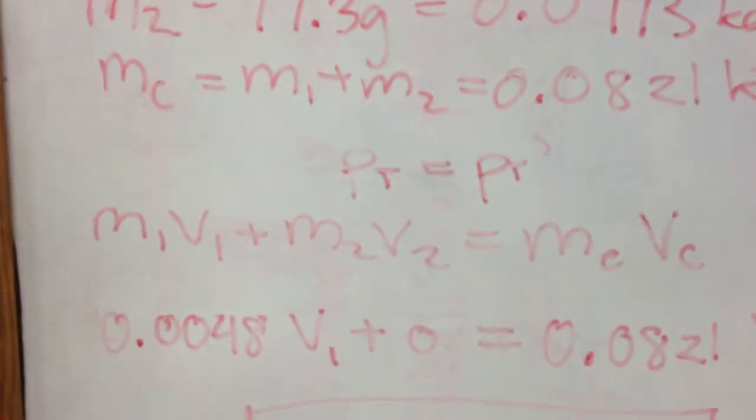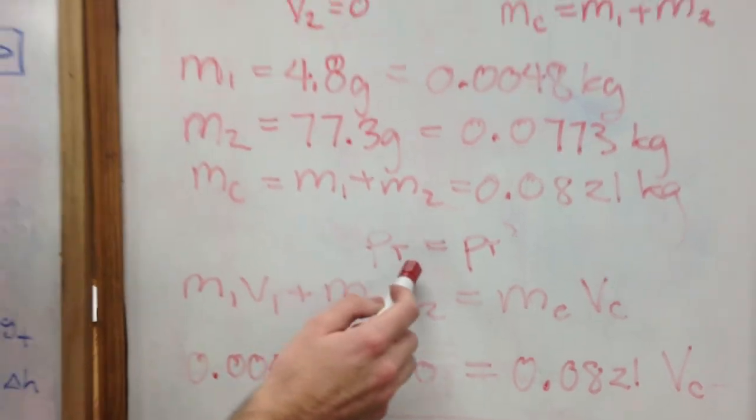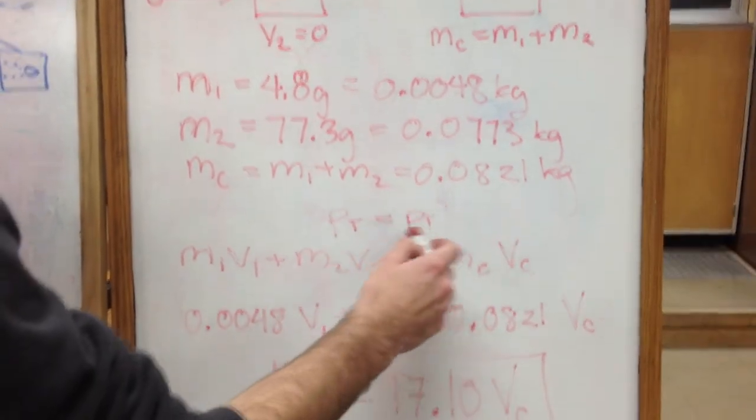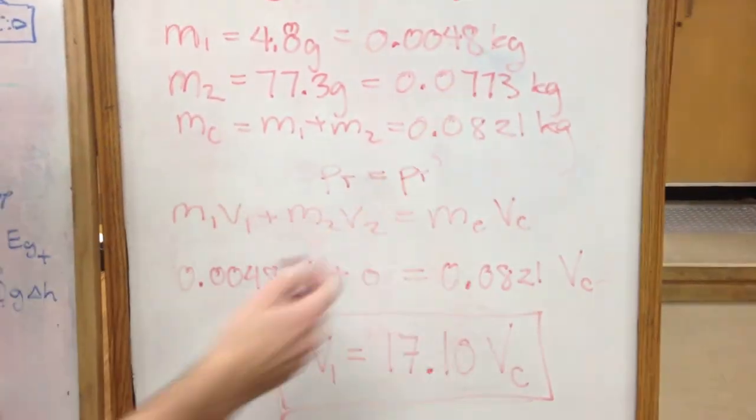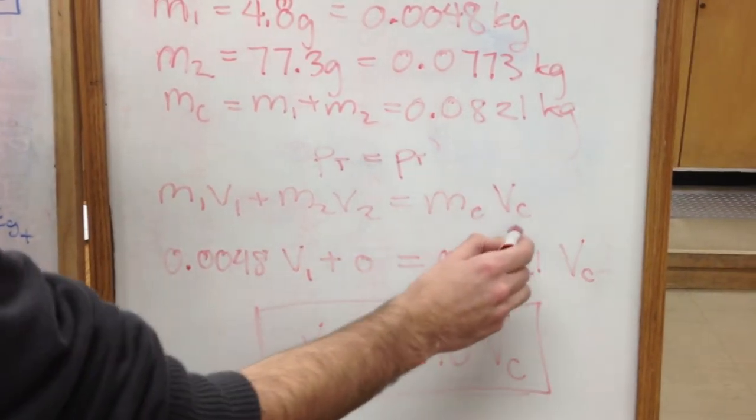Using the law of conservation of momentum, we compare the momentum of the objects before, and we say that that momentum equals the momentum of the objects combined afterwards. m1v1 plus m2v2 equals m combined v combined.